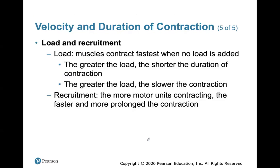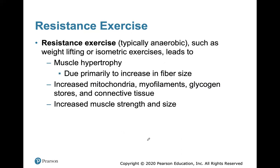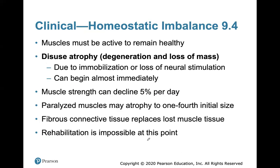Load and recruitment: muscles contract faster when no load is added — the greater the load, the slower the contraction. Recruitment: more motor units contracting means faster and more prolonged contraction. Aerobic endurance exercise like jogging, swimming, and biking leads to increased capillaries, mitochondria, and myoglobin synthesis, and may convert fast glycolytic fibers into fast oxidative fibers, resulting in greater endurance and resistance to fatigue. Resistance exercise like weightlifting leads to muscle hypertrophy, increased mitochondria, and increased muscle strength and size. Muscles must be active to remain healthy — disuse leads to atrophy, the degeneration and loss of mass from disuse and loss of neural stimulation; paralyzed muscles often atrophy.